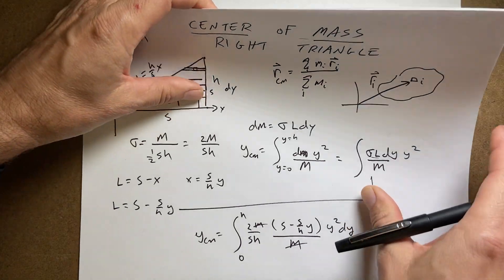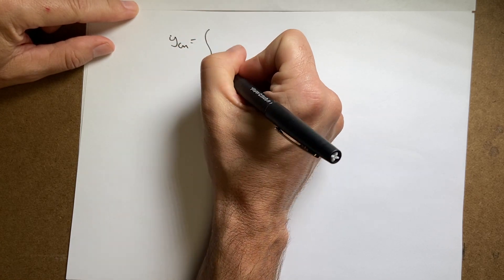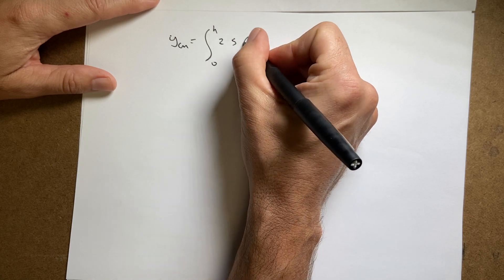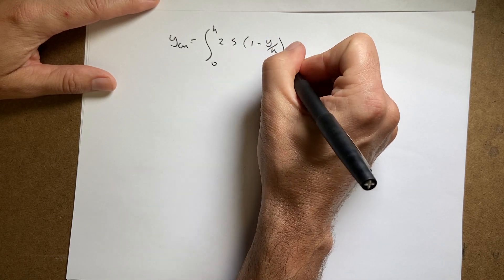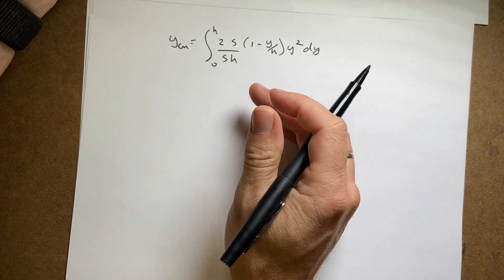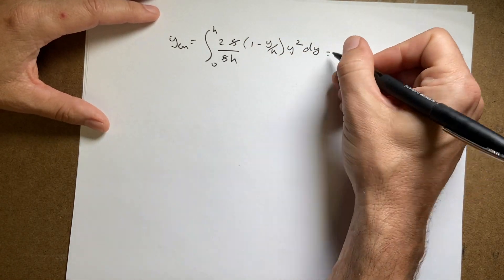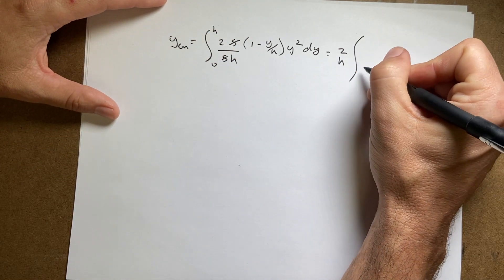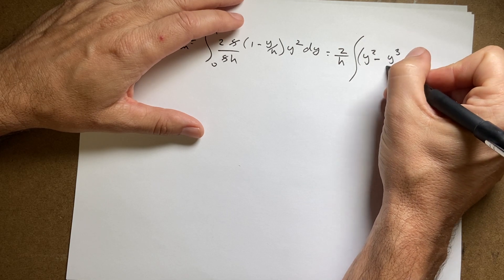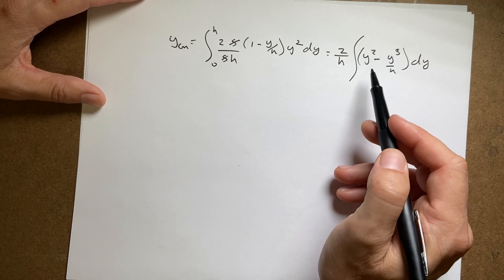Let me rewrite: y_cm equals the integral from 0 to h of (2s/sh) times (1 minus y/h) times y dy. Factoring: the s's cancel, and I factor out 2/h. Multiplying out, I get the integral of (y minus y² / h) dy. Now I can integrate each term using the power rule.